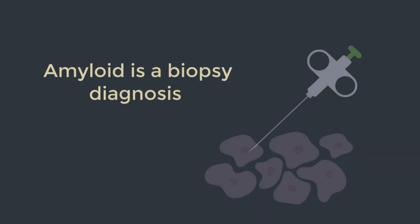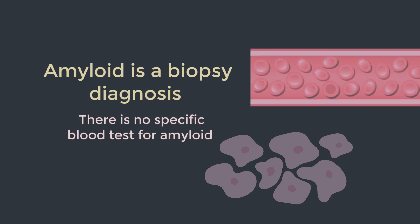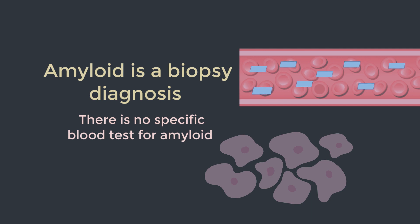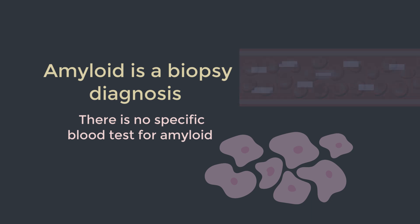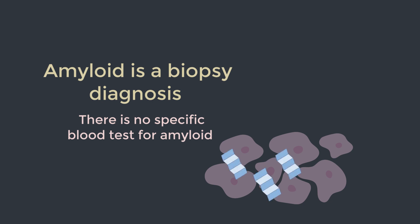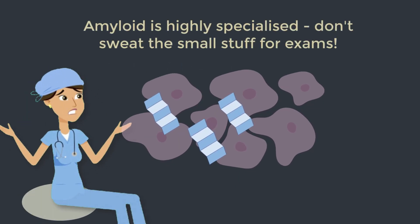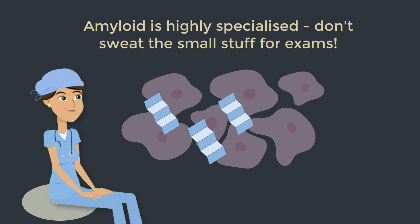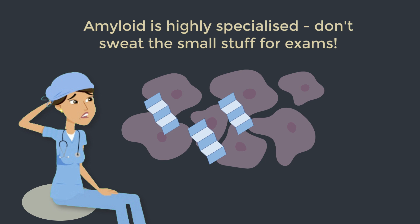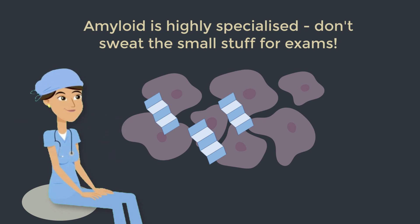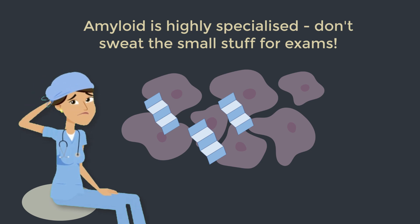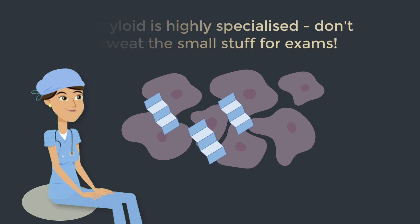One last thing to emphasize: amyloid is a biopsy diagnosis. There is no blood test for amyloid. Whilst the proteins that lead to amyloid do exist in the circulation, when they are in the circulation they look entirely normal — they don't become amyloid until they aggregate together inside tissues to form those fibrils. So amyloid is a tissue diagnosis. Of course, if you find amyloid in a tissue, especially with systemic causes, you'll look at the context of the patient and search for that cause — but getting to the bottom of the fine print is a tutorial for another day.